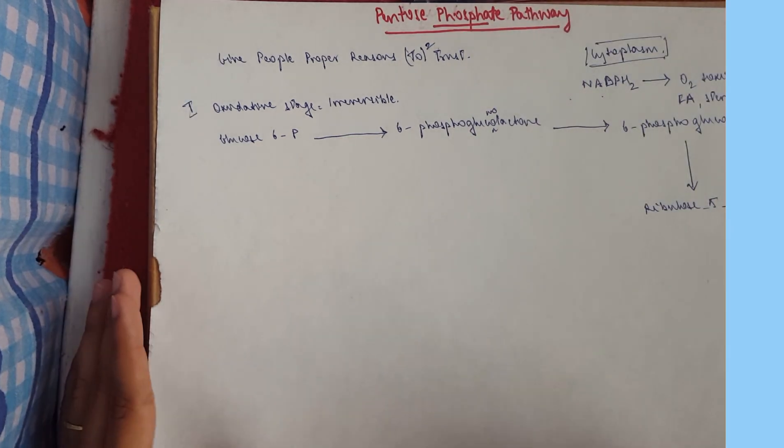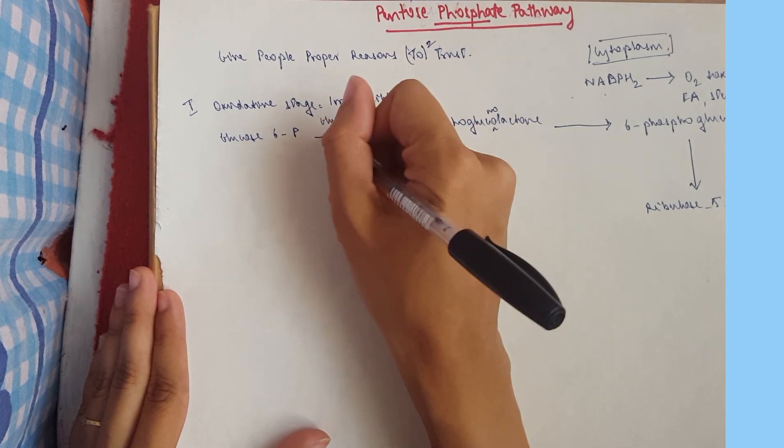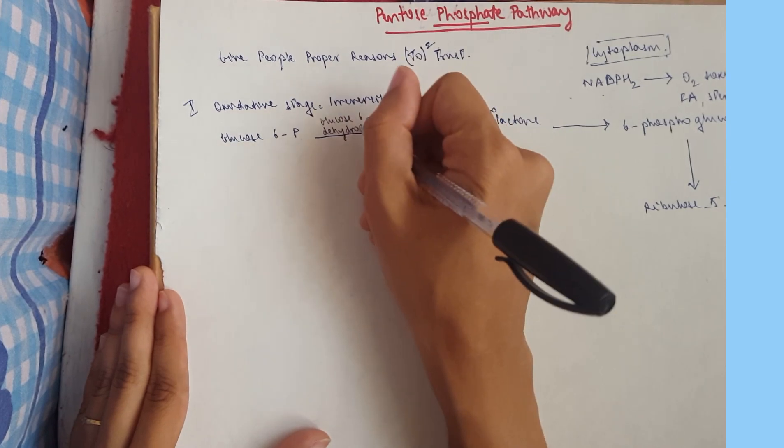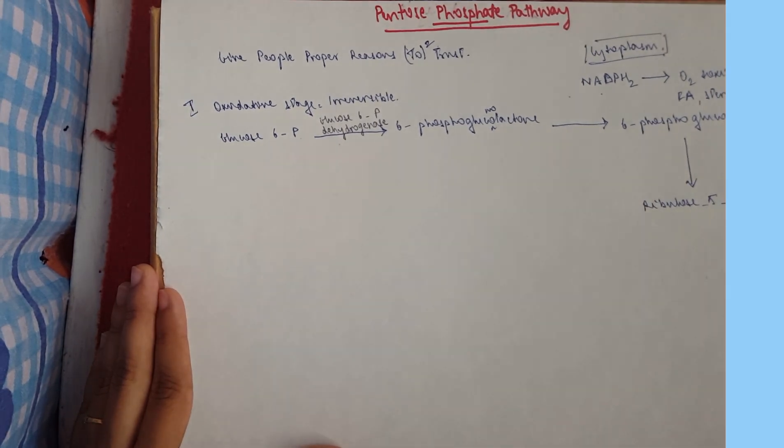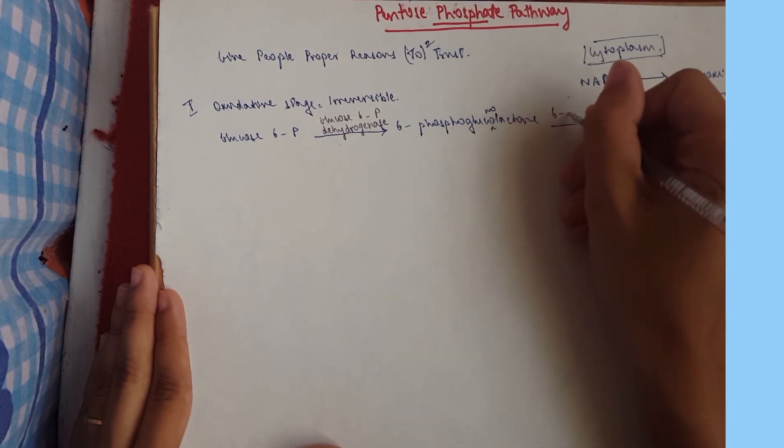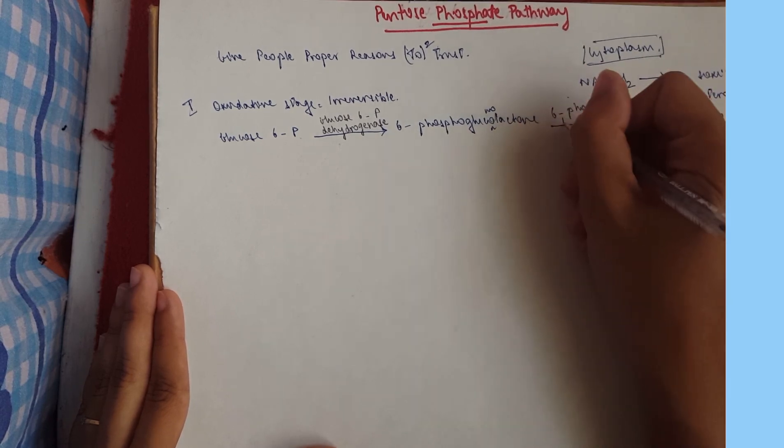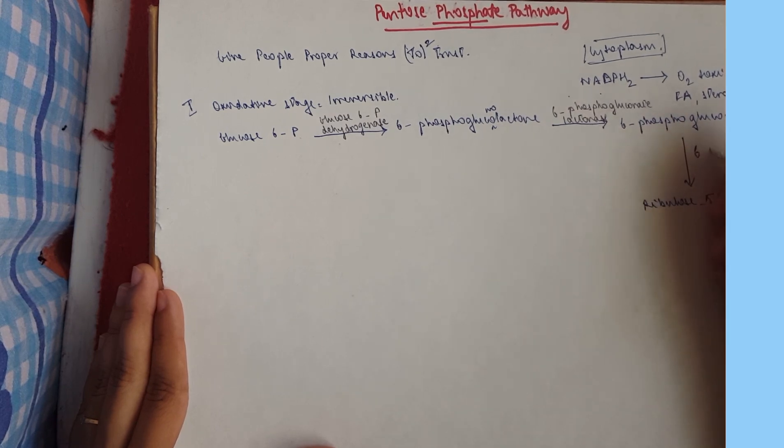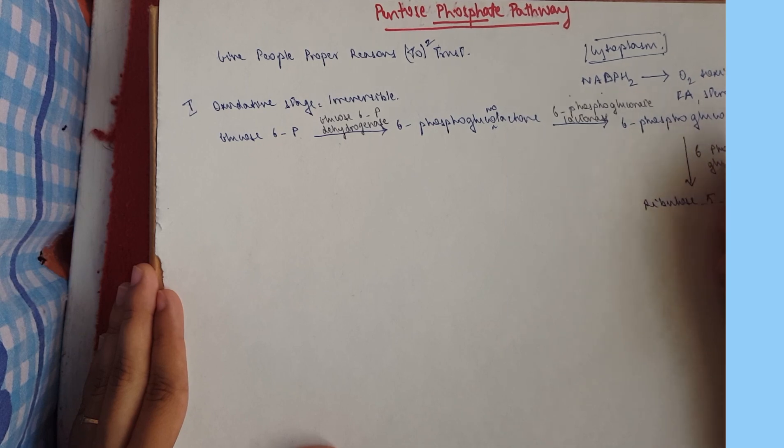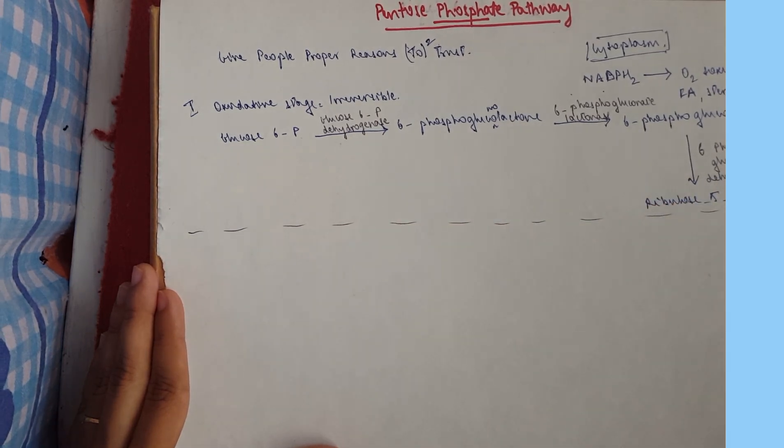Okay, now we move to our enzymes. So glucose 6-phosphate will be glucose 6-phosphate dehydrogenase. Now in the absence of this enzyme one can develop hemolytic anemia. Then we move from phospho-gluconolactone to 6-phospho-gluconate and that would be gluconate lactonase. Then from gluconate to ribulose you've got 6-phospho-gluconate dehydrogenase, and that is our oxidative stage.